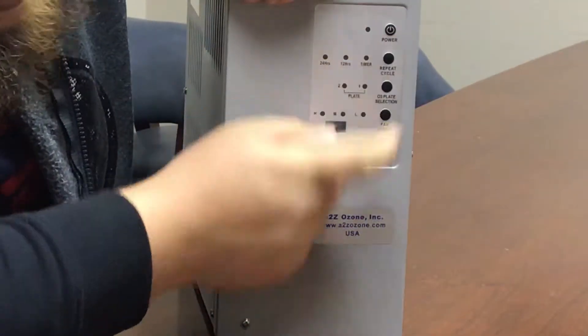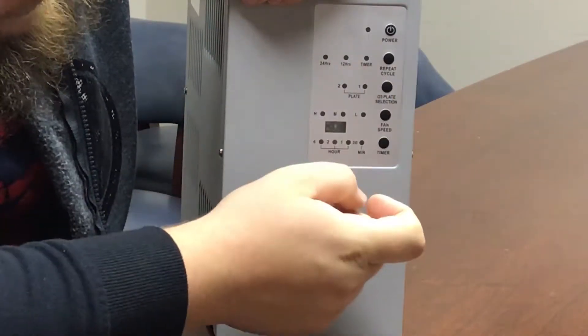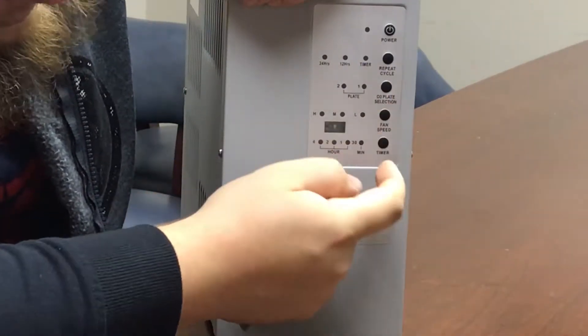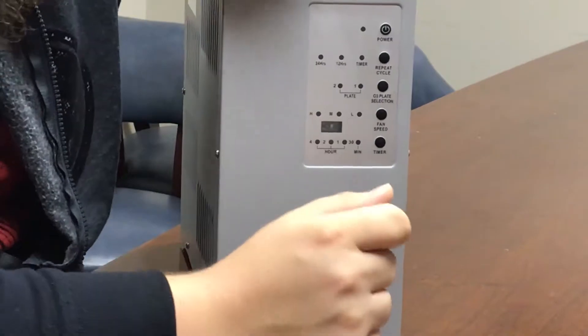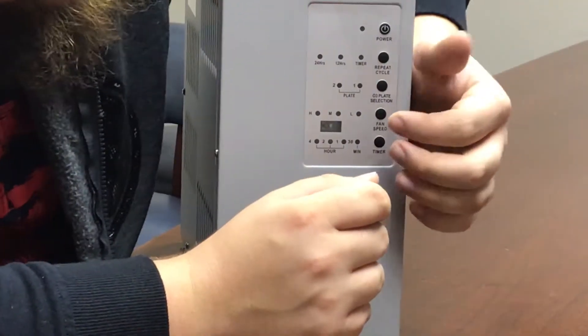You have your faceplate here: your power button, your repeat cycle, your O3 plate selector, your fan speed, and your timer. Usually, whenever you're going to be using your A7K for a remediation-type situation, you're always going to want it on the high setting with both plates running.